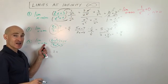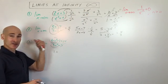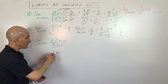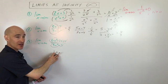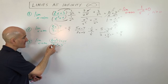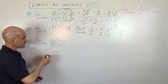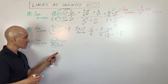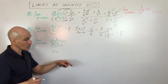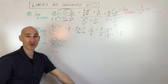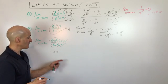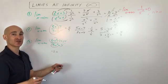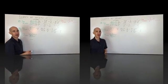If x is approaching negative infinity — going left on the graph — then this would go to negative infinity. But if we change the leading coefficient to negative, making it negative 2x, as x gets larger this goes down toward negative infinity; however, if you're going to negative infinity, the two negatives cancel and you'd actually be going up toward positive infinity.